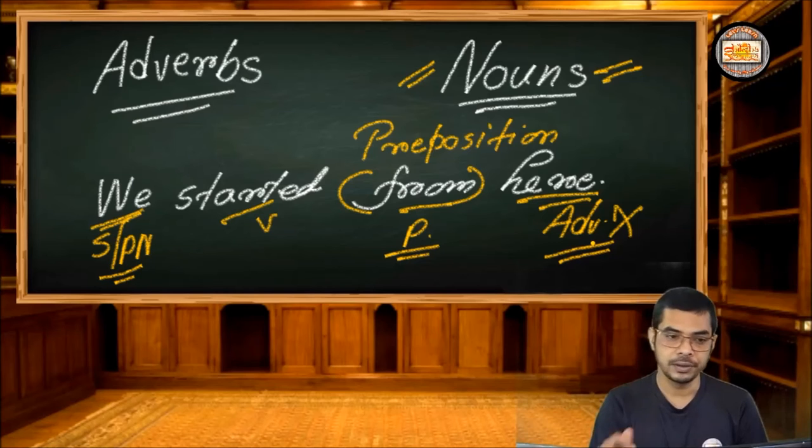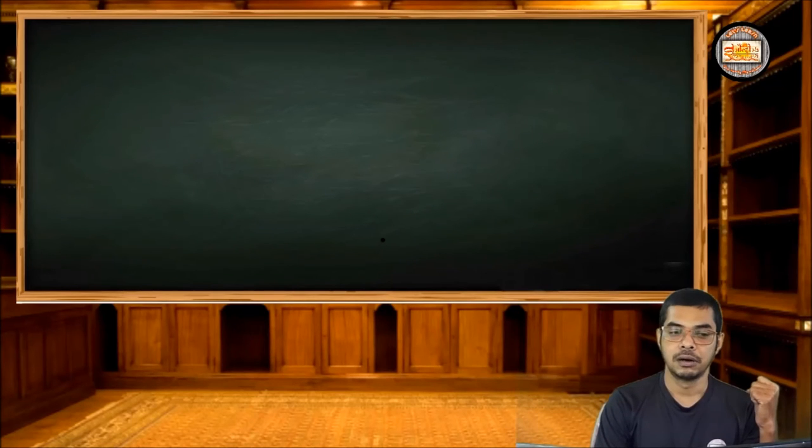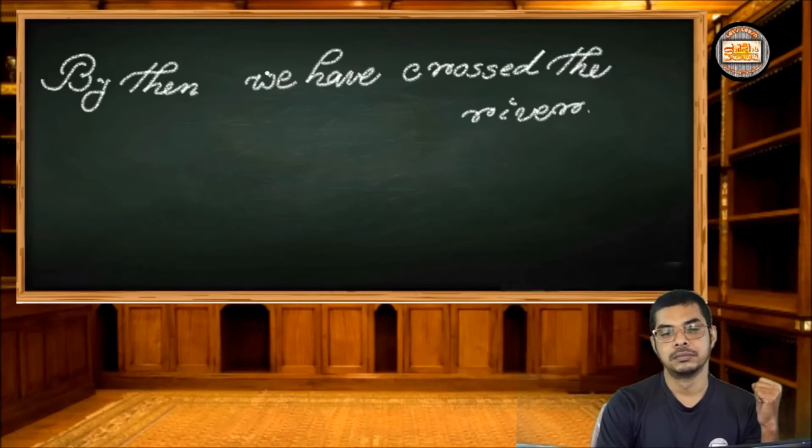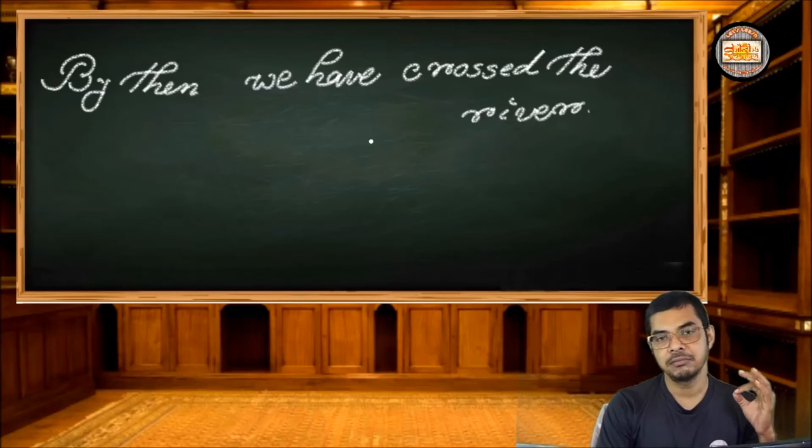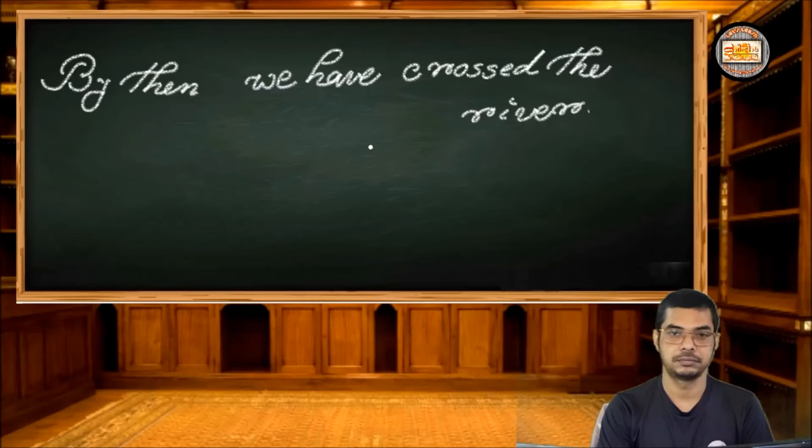And this is how an adverb can be a noun in several sentences. If it's not clear, let me have another example from here. We'll get a little of this. So let's find out if we have any other here. This one. By then we have crossed the river. By then we have crossed the river.